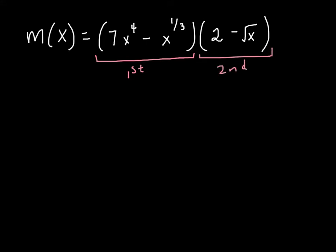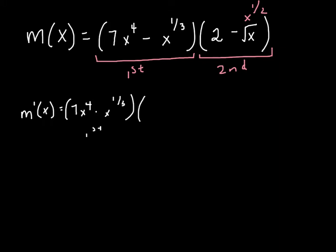It looks like the only piece that I might want to rewrite is right here — I know that that's x to the one-half power. And now I simply start my derivative. M prime of x is going to be equal to the first, so I just rewrite it: 7x to the fourth minus x to the one-third, times the derivative of the second. The derivative of the second — we go piece by piece. The derivative of 2 is 0.